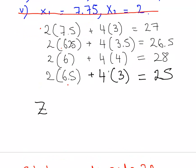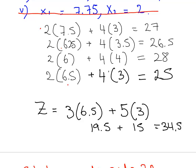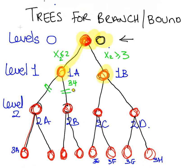z equals 3 times 6.5 plus 5 times 3. That is 19.5 plus 15, that's 34.5. Let's go back to our tree. We found that for node 1A, the maximum objective value is 34. Here, for node 1B, it's 34.5.